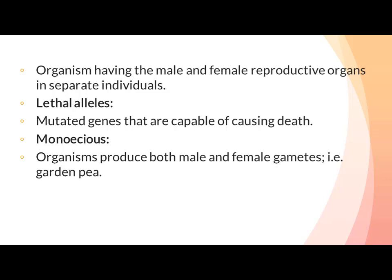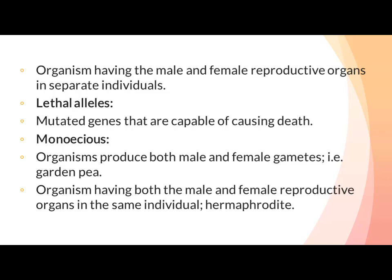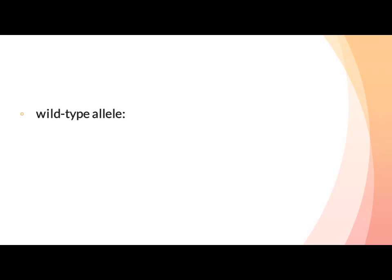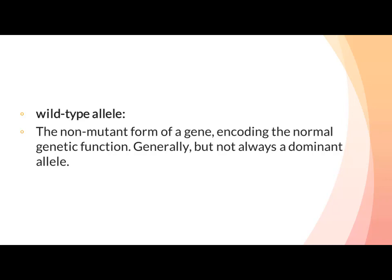Monoecious: Organisms that produce both male and female gametes — یعنی ایک ہی organism سے male اور female gametes produce ہوتے ہیں — انہیں monoecious کہتے ہیں۔ Organism having both male and female reproductive organs in the same individual is also called hermaphrodite. Wild Type Allele: The non-mutant form of a gene encoding the normal genetic function — generally but not always dominant. Wild type وہ gene یا character ہوتا ہے جس میں کوئی mutation نہ ہو — یہ dominant بھی ہو سکتا ہے اور recessive بھی۔